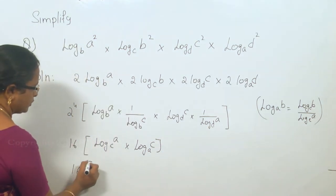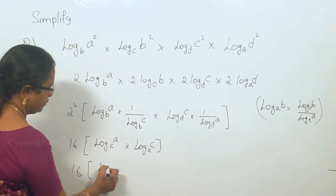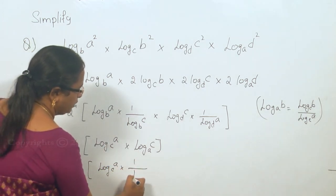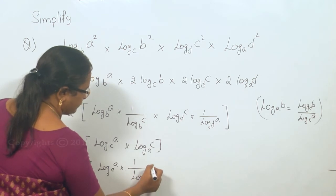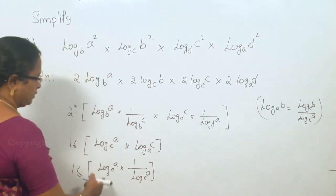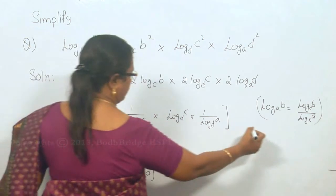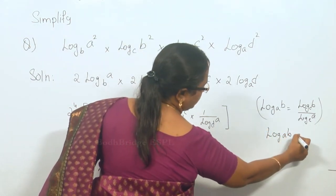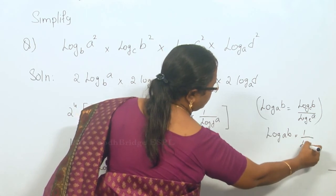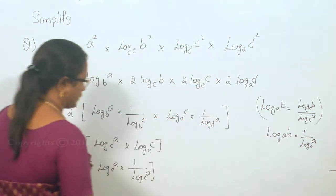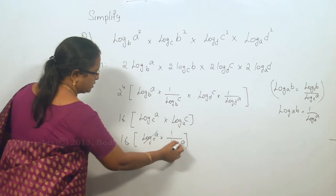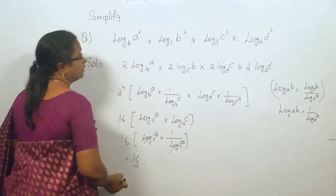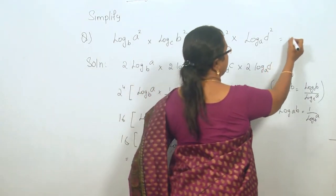So, we have 16 into log a to the base c, into 1 divided by log a to the base c. Using the formula that log b to the base a can be written as 1 by log a to the base b, these two terms are the same and cancel out. Therefore, the answer is 16.